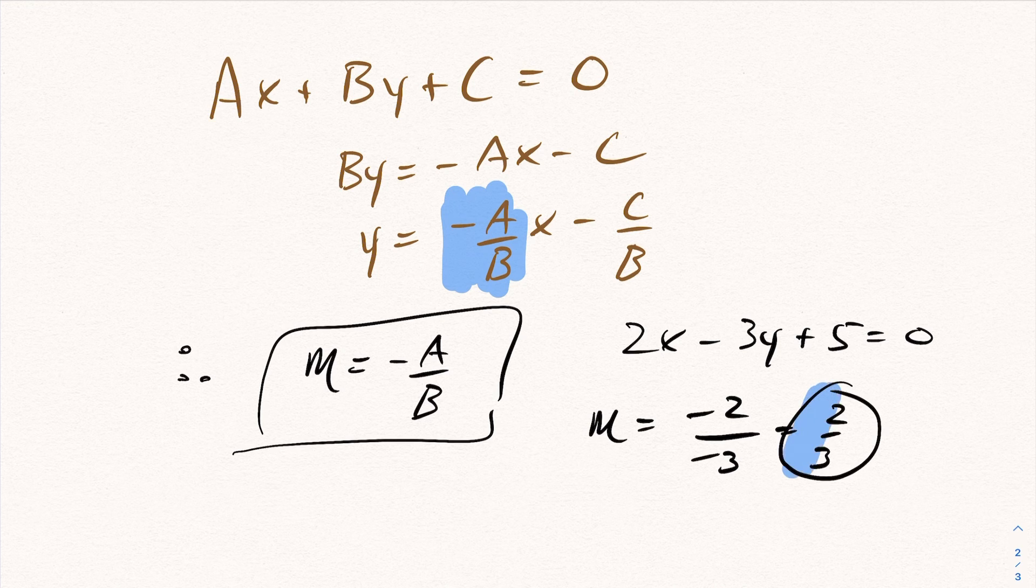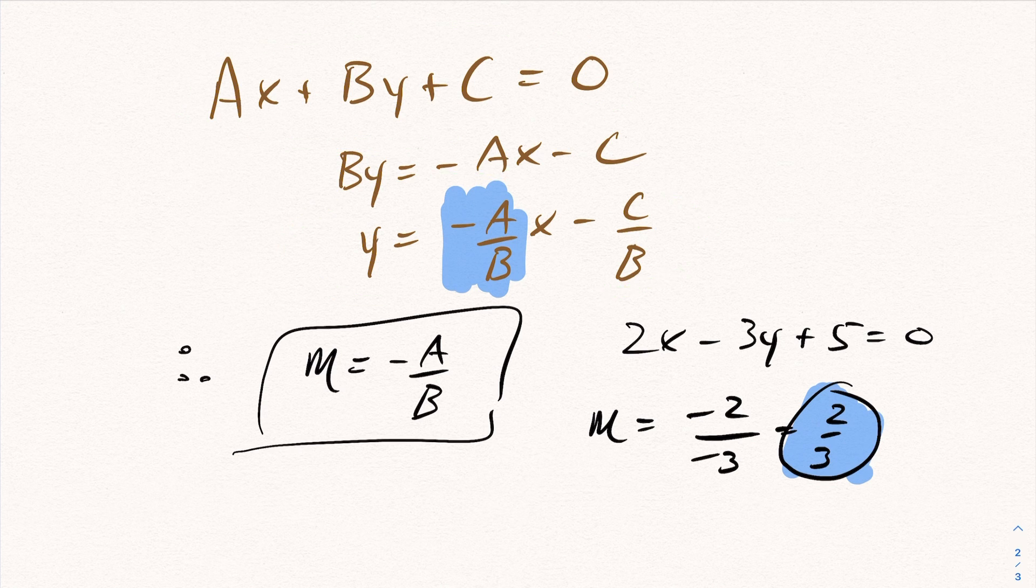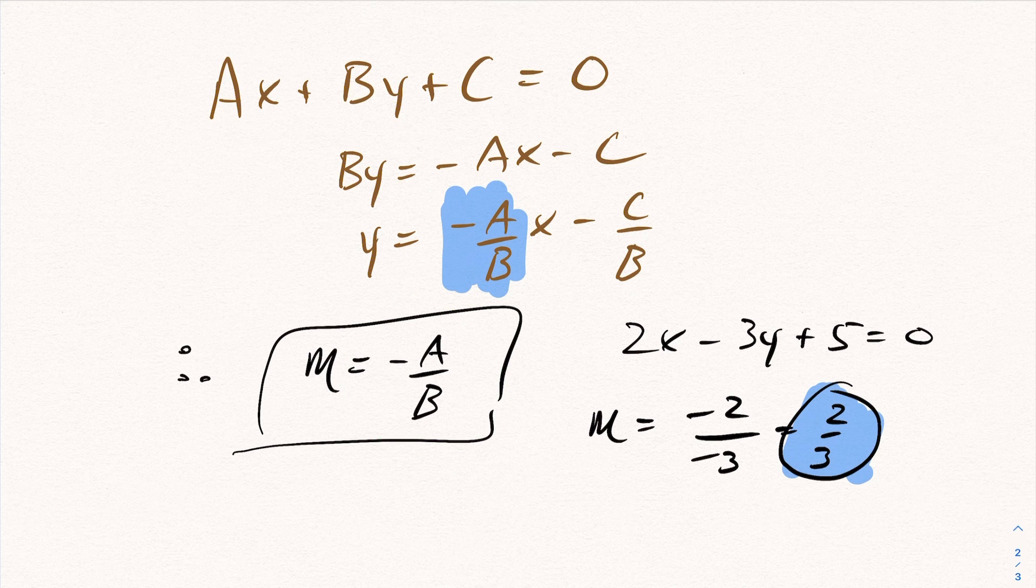So keep that in mind. You just have to be careful with the signs. You don't make a sign mistake. But again, if you want a quicker way, if your motivation is just to find the slope, sometimes it's quicker to actually use the negative A over B formula for a linear equation. But you have to be in standard form, and you've got to watch your minus signs.